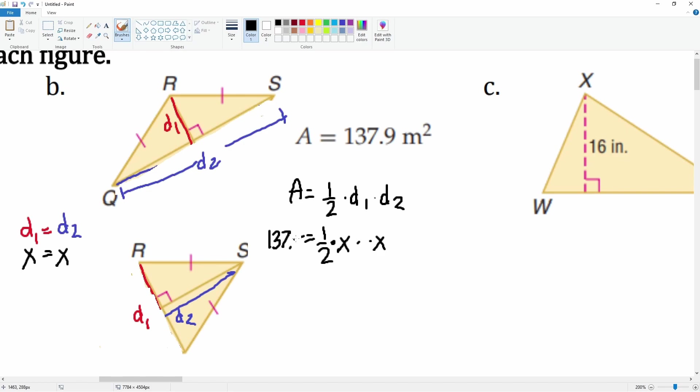So let's multiply by two to cancel out the 1/2. We get 137.9 × 2 = 275.8 = x². Now you want to square root both sides. The square root of 275.8 gets you x ≈ 16.6. So diagonal one is roughly 16.6 and diagonal two is also roughly 16.6.